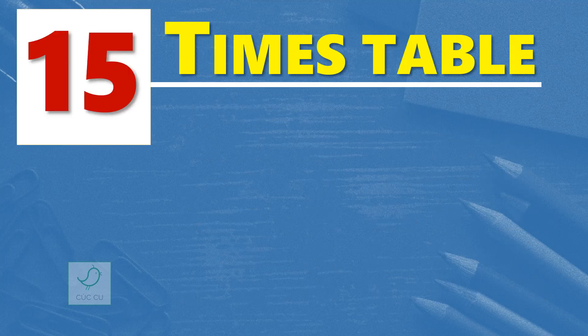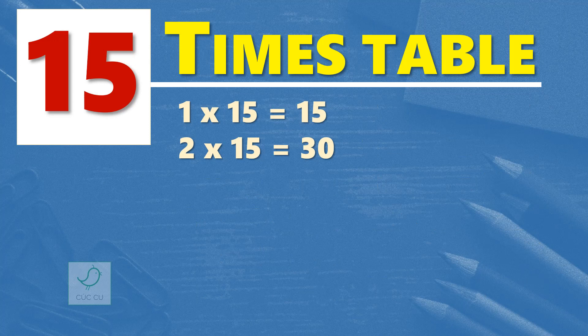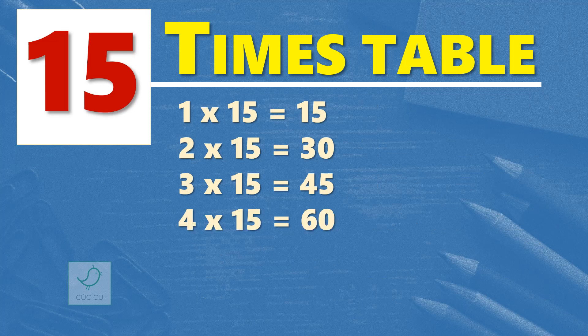15 times table. 1 times 15 is 15. 2 times 15 are 30. 3 times 15 are 45. 4 times 15 are 60.